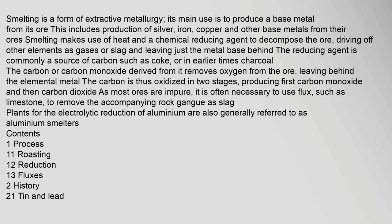Smelting makes use of heat and a chemical reducing agent to decompose the ore, driving off other elements as gases or slag and leaving just the metal base behind. The reducing agent is commonly a source of carbon such as coke, or in earlier times charcoal. The carbon or carbon monoxide derived from it removes oxygen from the ore, leaving behind the elemental metal. The carbon is thus oxidized in two stages, producing first carbon monoxide and then carbon dioxide.